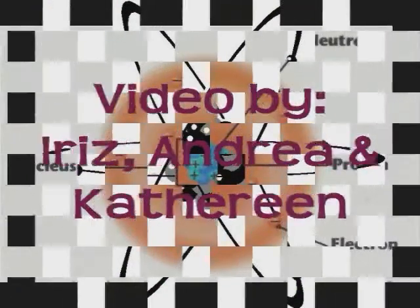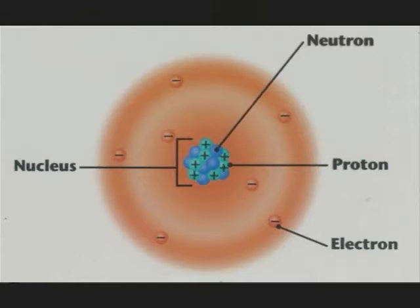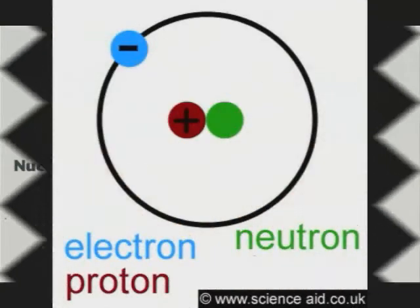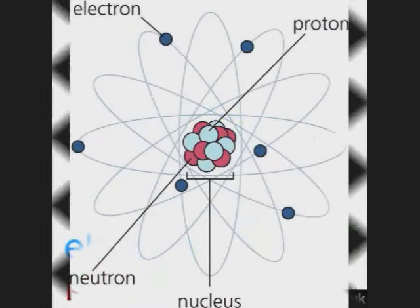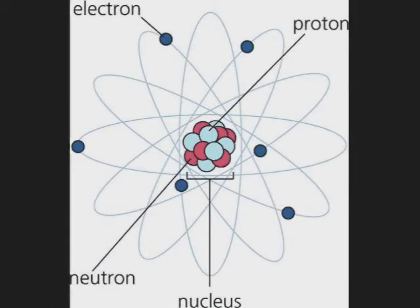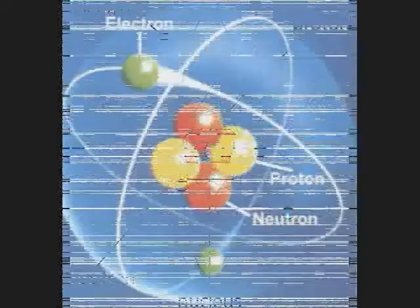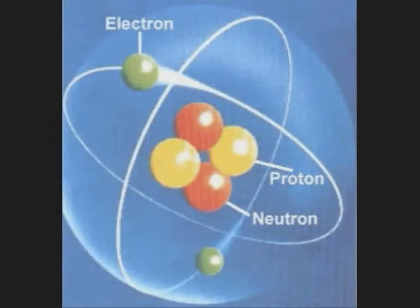An atom is the smallest particle that comprises a chemical element. An atom consists of an electron cloud that surrounds a dense nucleus. This nucleus contains positively charged protons and electrically neutral neutrons, whereas the surrounding cloud is made up of negatively charged electrons.